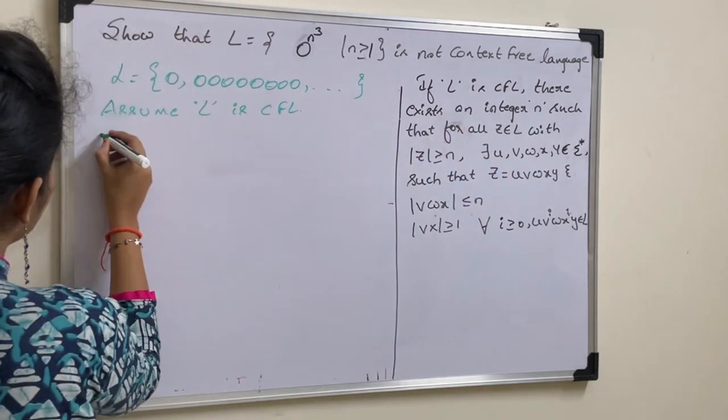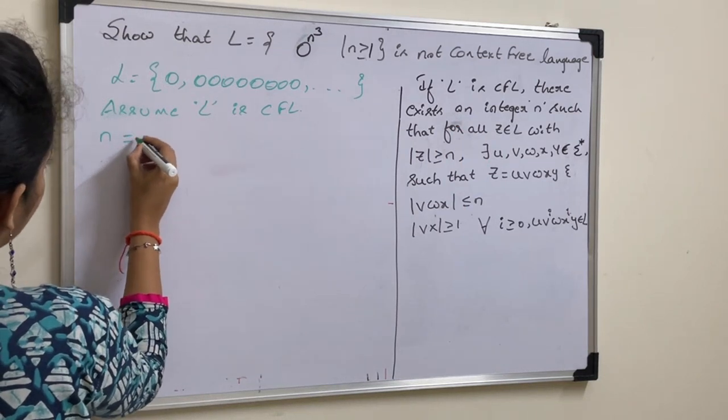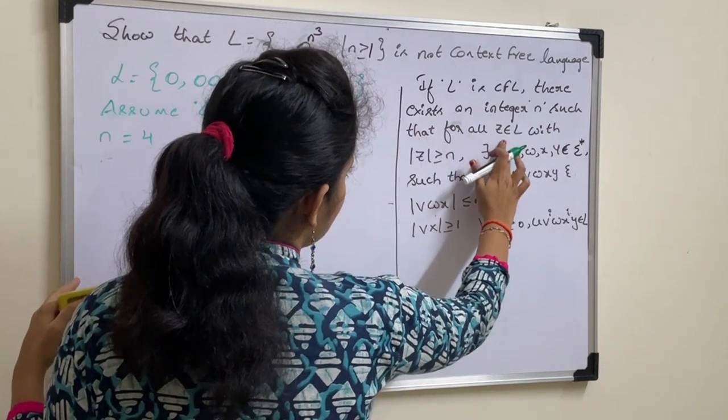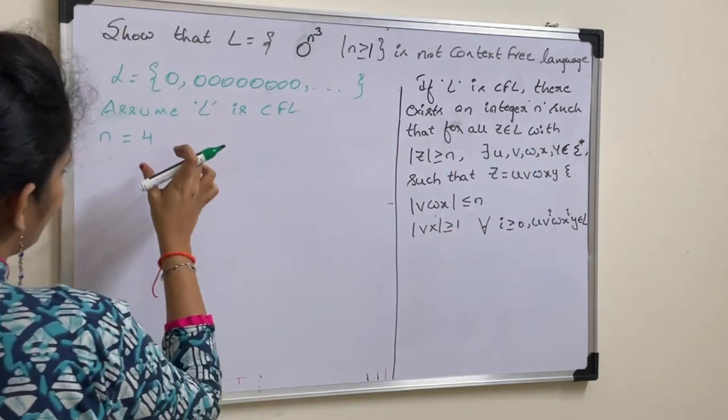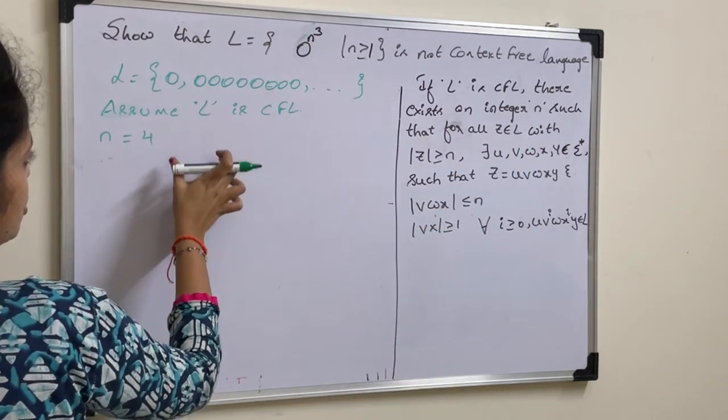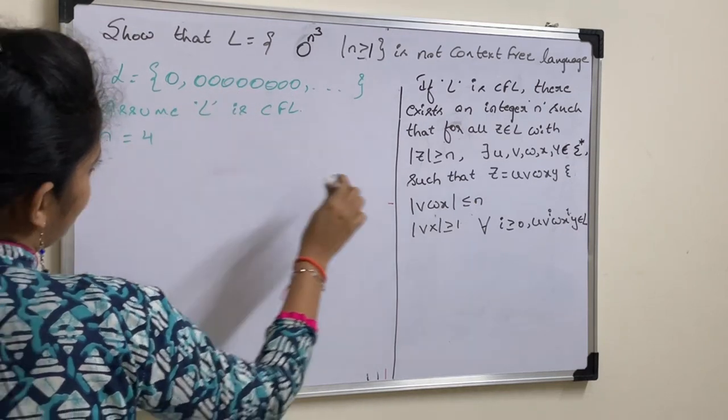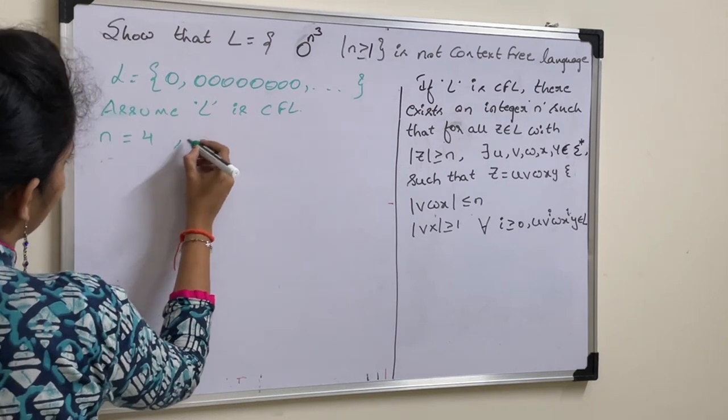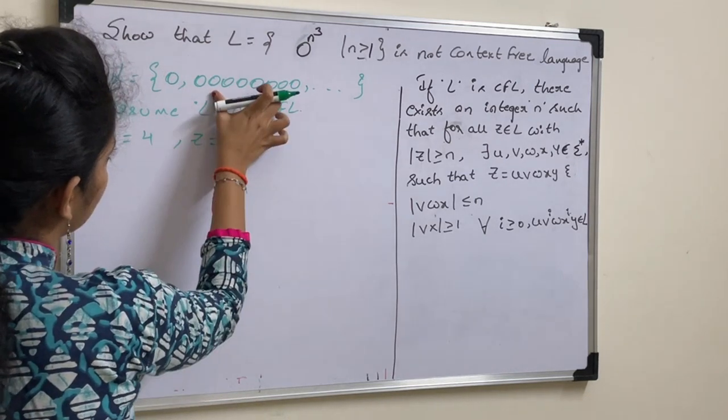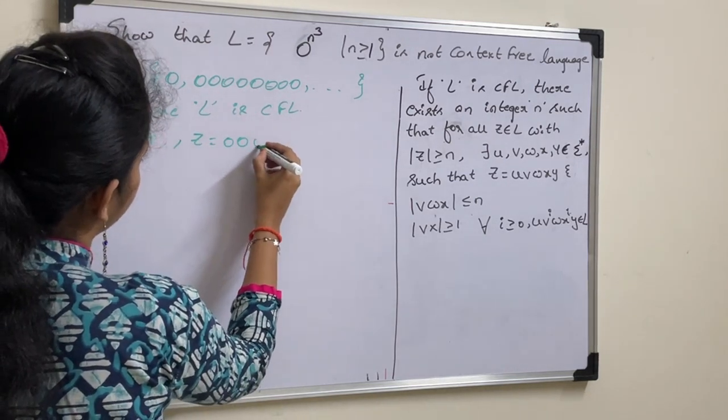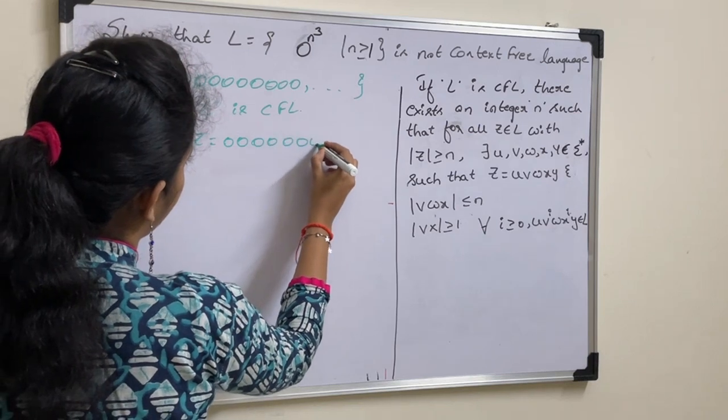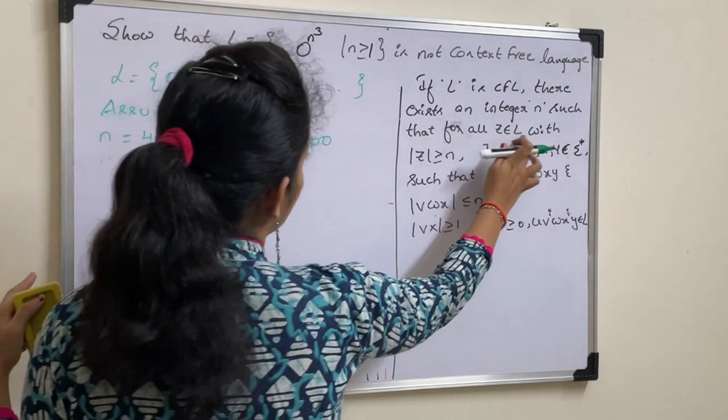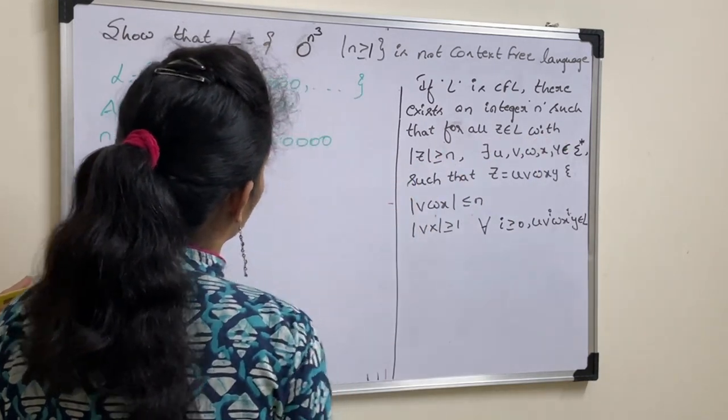Now, take one integer value n. Let n value be 4. Such that for all z belongs to n. You need to take one string from this language and that string becomes your z value. Take one z, z equal to, I am taking this string.